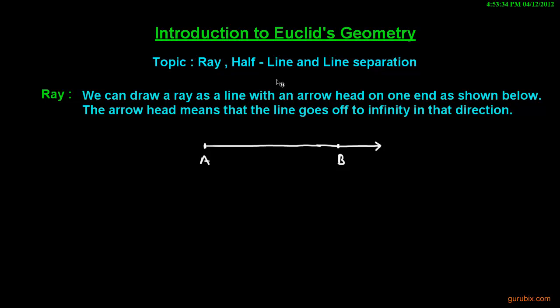We can draw a ray as a line with an arrow head on one end as shown below. This is the figure of ray. The arrow head means that the line goes off to infinity in that direction.